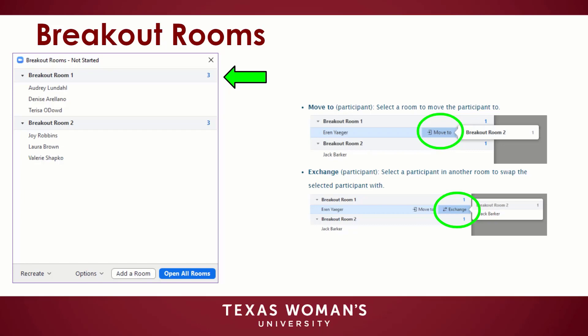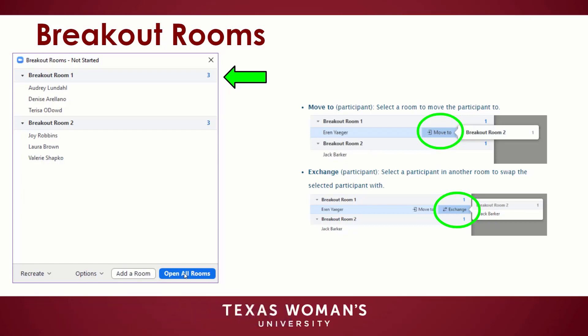Recreate will delete existing breakout rooms and create new ones. Add a Room will add another breakout room. Open All Rooms will start the rooms — all participants will be moved to their respective rooms after confirming the prompt to join the breakout room. The host will be left in the main meeting until manually joining one of the rooms. The participant and the host, when manually joining a room, will see the joining breakout rooms message.